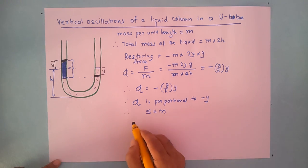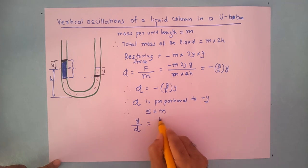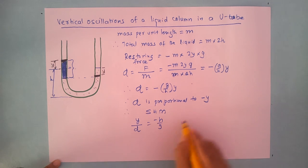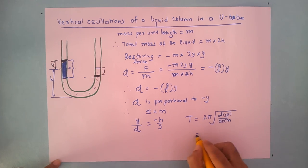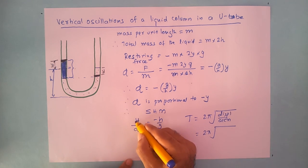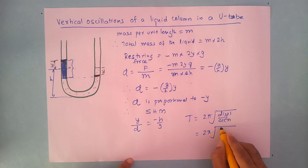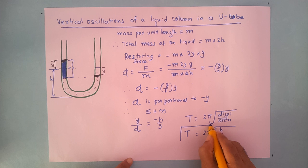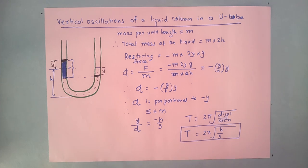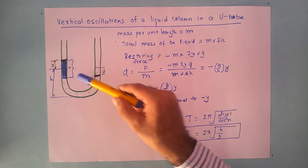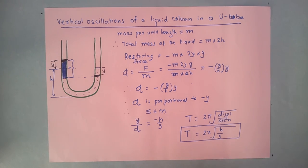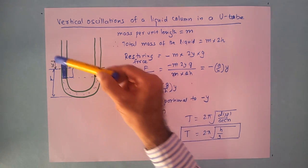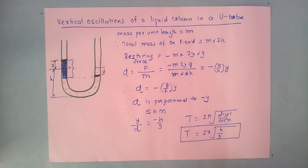As always, we will look at the time period. Rearranging the equation, y upon α equals h upon g (ignoring the negative sign since time period is a scalar). We know that time period T equals 2π times the square root of displacement by acceleration, so T equals 2π times the square root of h upon g. If you know the height h and acceleration due to gravity, you can determine the time period of the oscillations.